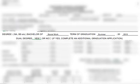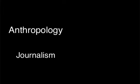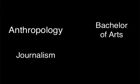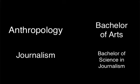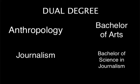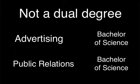Some students will have a dual degree. But what's the difference between a dual degree and a dual major? A dual degree is when you're earning two different types of Bachelor's degrees. If you are a dual degree, you will need to fill out two graduation applications. For example, let's say you're majoring in Anthropology and Journalism. This would be considered a dual degree, as Anthropology is a Bachelor's of Arts and Journalism is a Bachelor's of Science in Journalism; therefore you would need two applications. But let's say you are majoring in Advertising and Public Relations. Since both of these are Bachelor's of Science degrees, you will only need one application.